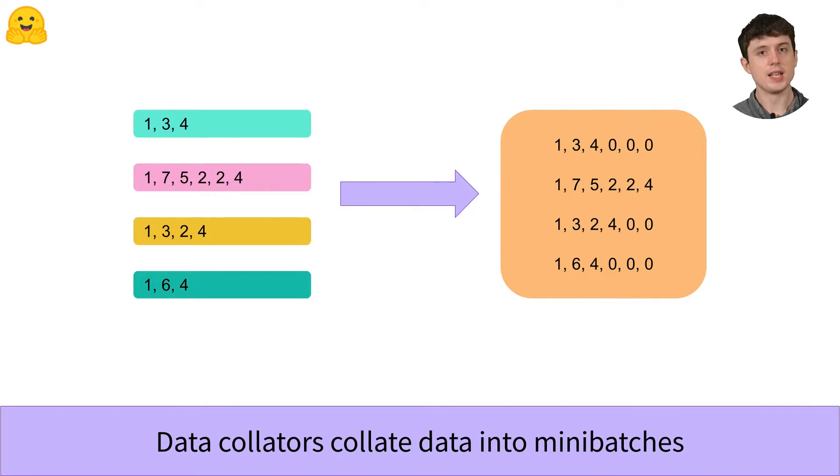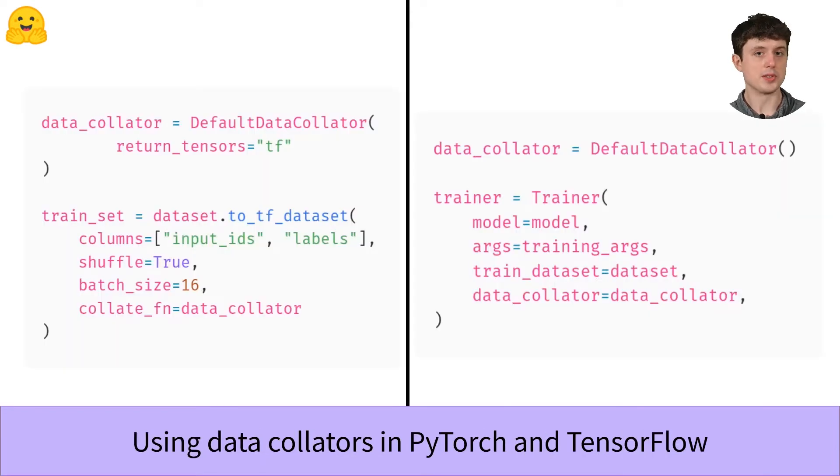But for other workflows, data collators can be quite complex, as they handle some of the pre-processing needed for that particular task. So when you want to use a data collator, for PyTorch users, you usually pass the data collator to your trainer object.